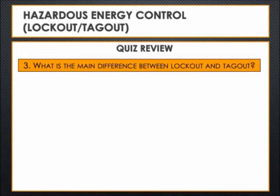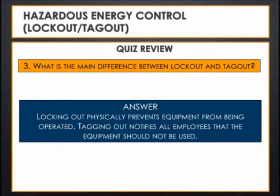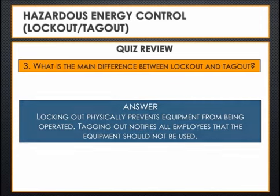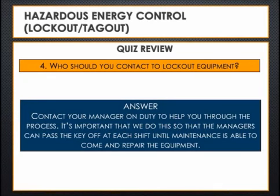Quiz Question 3: What is the main difference between lockout and tagout? Answer: Locking out physically prevents equipment from being operated. Tagging out notifies all employees that the equipment should not be used. Question 4: Who should you contact to lock out equipment? Answer: Contact your manager on duty to help you through the process. It's important that we do this so that managers can pass the key off at each shift until maintenance is able to come and repair the equipment.